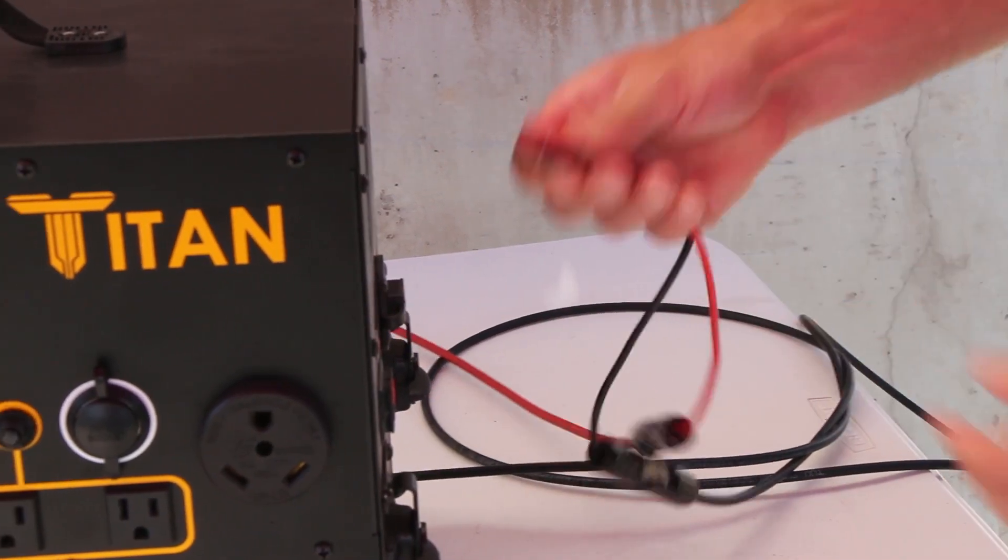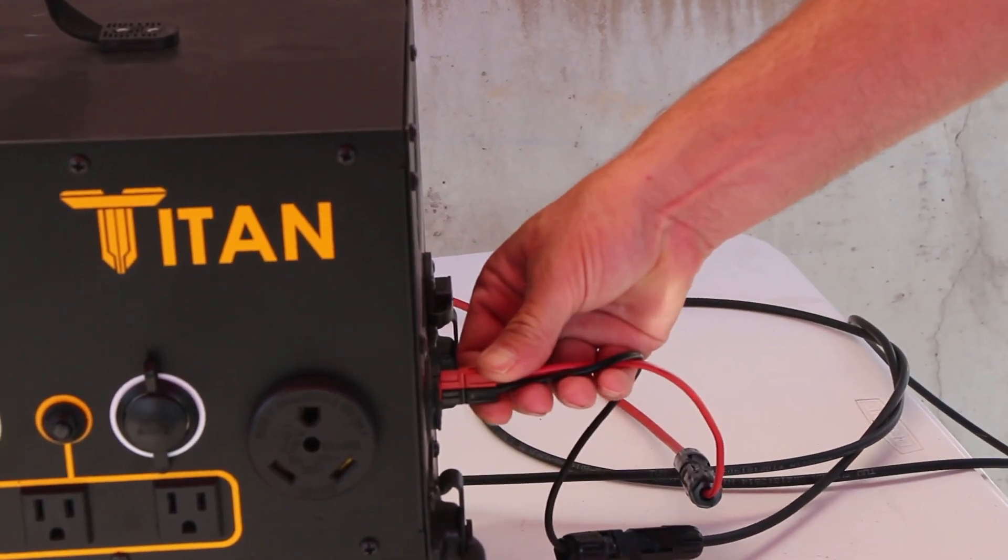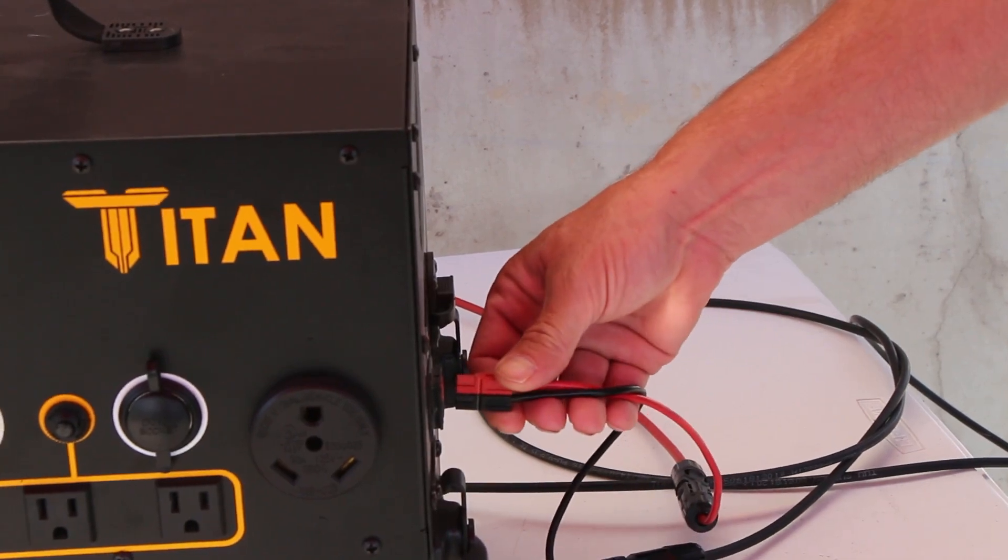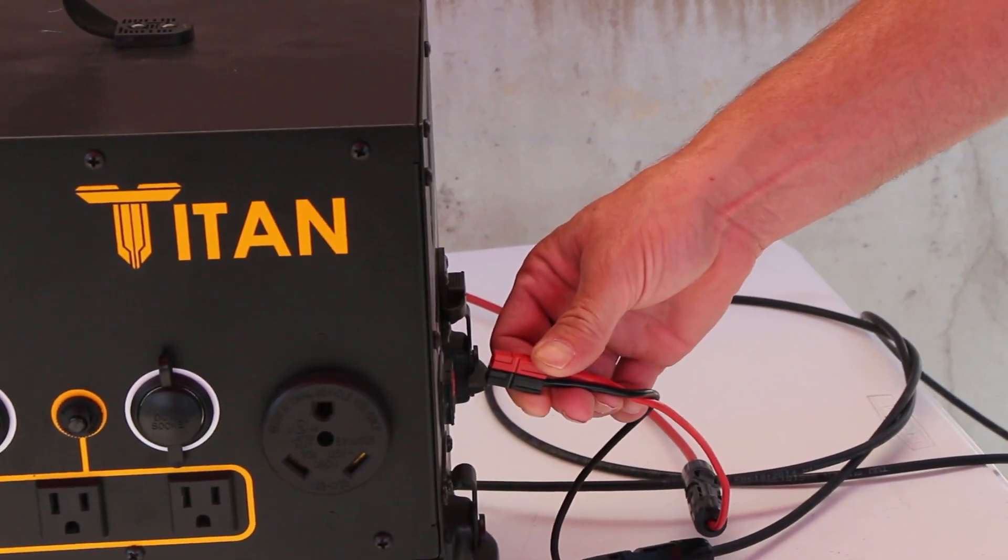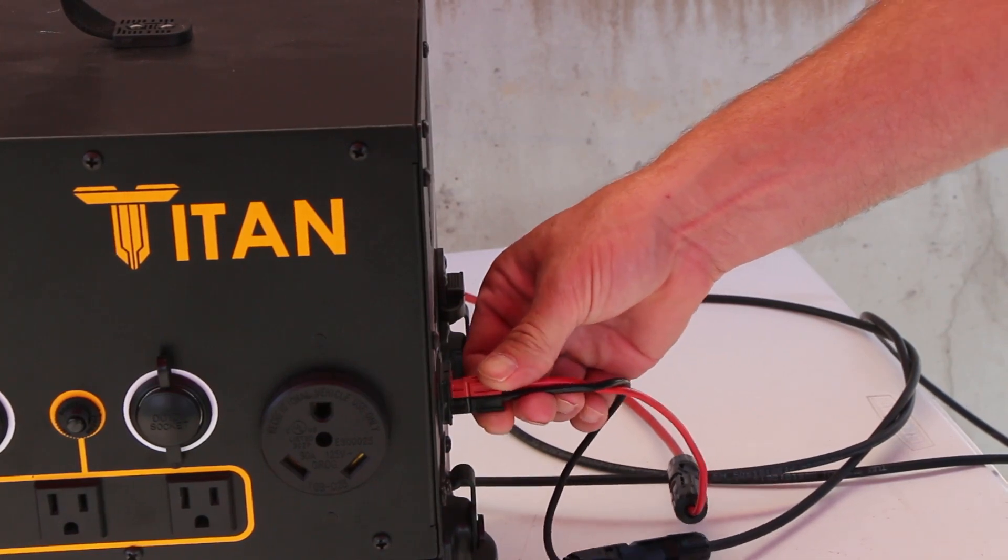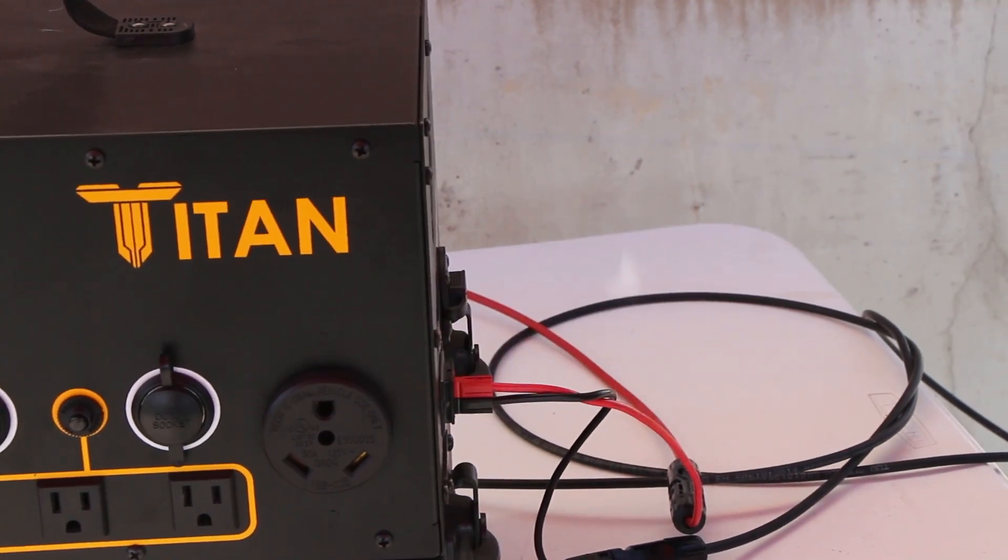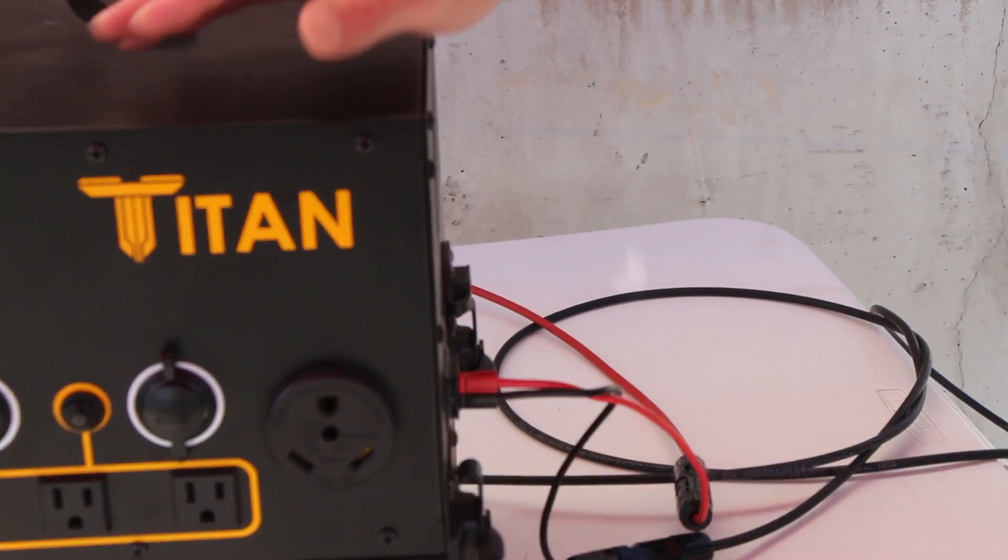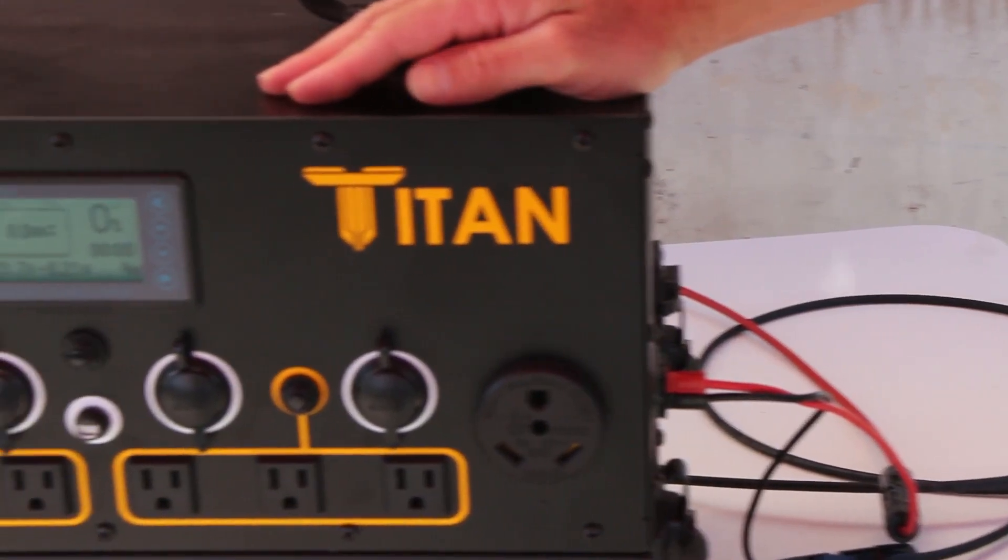Now you can plug this into either set of plugs. There's two MPPT controllers in this generator and either one should work. So we're going to plug this in to that set. Now once you plug it in, it'll take up to 20 seconds for it to start charging.